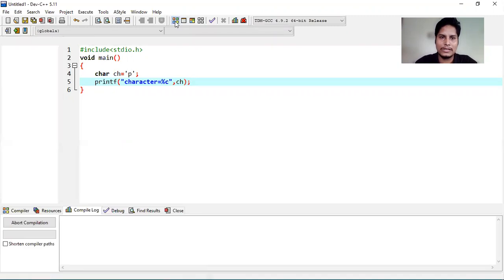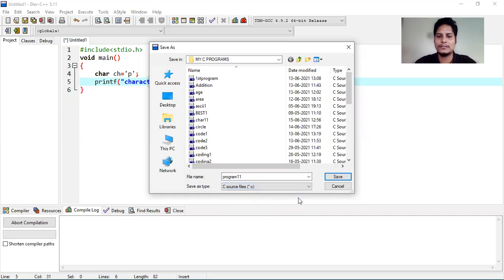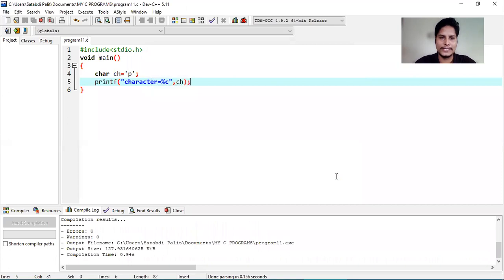Now, I'm compiling it. When I will compile it, it will ask me to save the program. So, I'm saving the program as program11 and the type will be c source files within bracket .c extension. It will save as .c extension.